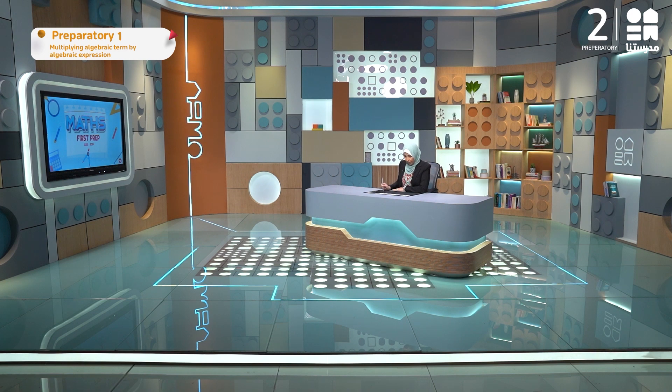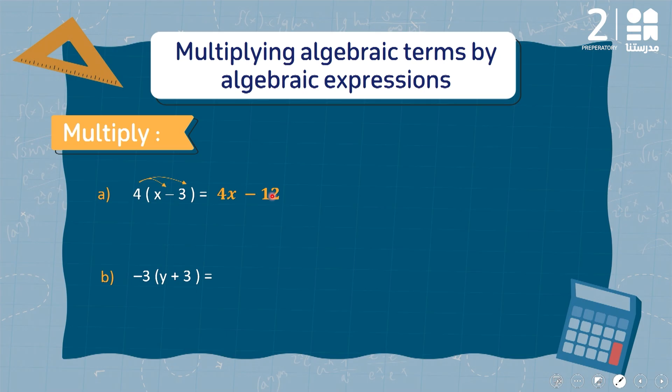Second example: now I have negative 3. I want to multiply it by the algebraic expression 3y plus 3 in the bracket. I will distribute the negative 3 inside the bracket.